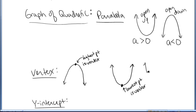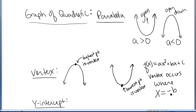When you have the formula f of x equals ax squared plus bx plus c, you can find the vertex. The vertex of f of x equals ax squared plus bx plus c occurs where x equals negative b over 2a. So to find the vertex, if you have the formula, you can use the formula x equals negative b over 2a.